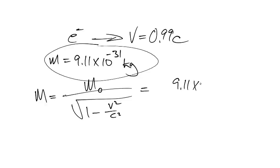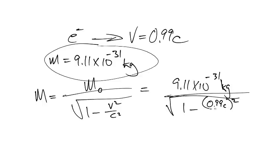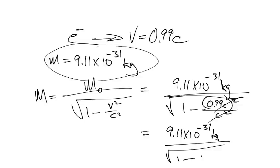So 9.11 times 10 to the negative 31 kilos divided by the square root of 1 minus... Now I'm going to use 0.99c here and square that and divide it by C squared here. C squared cancels C squared. And of course, in the denominator, I end up with the square root of 1 minus 0.99 squared.